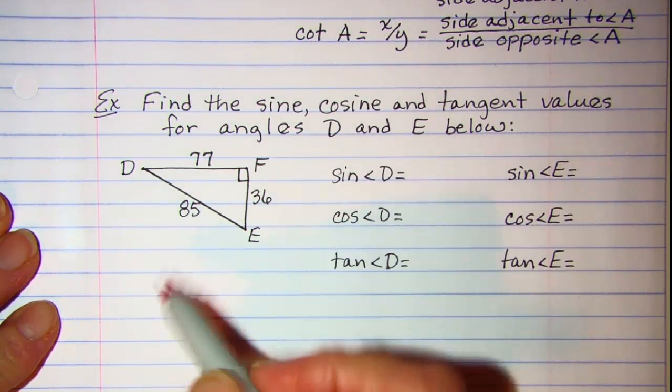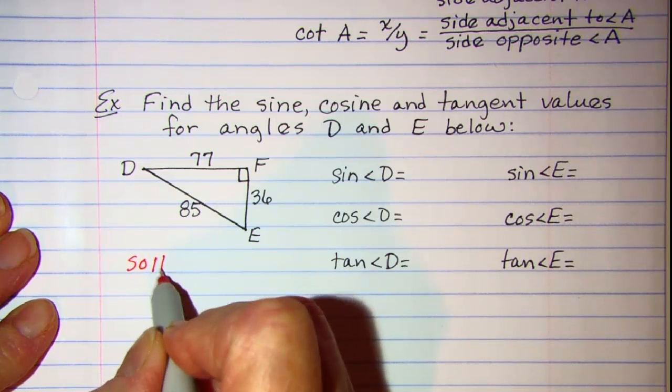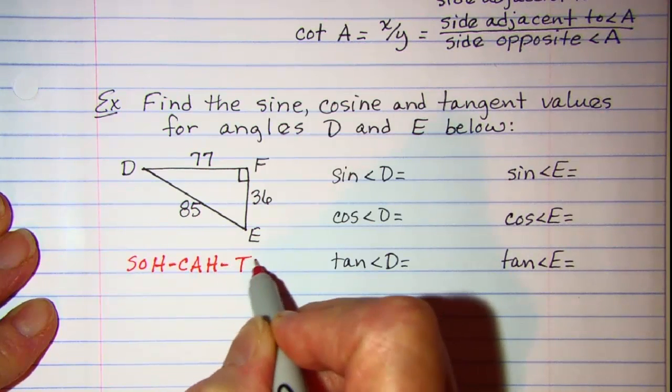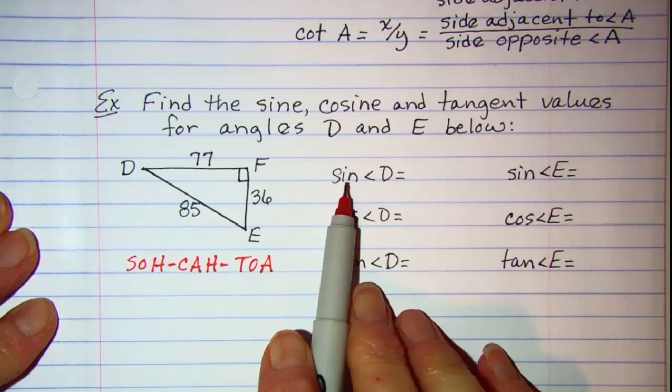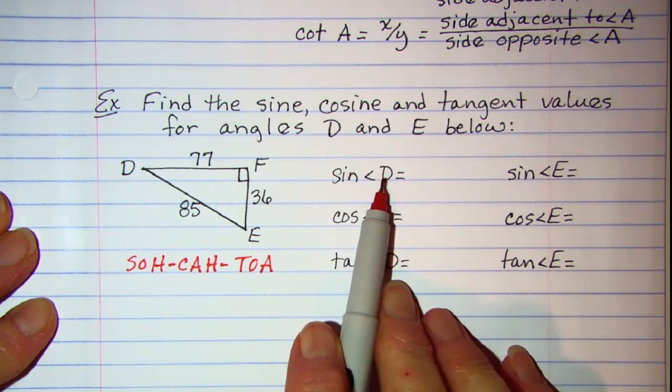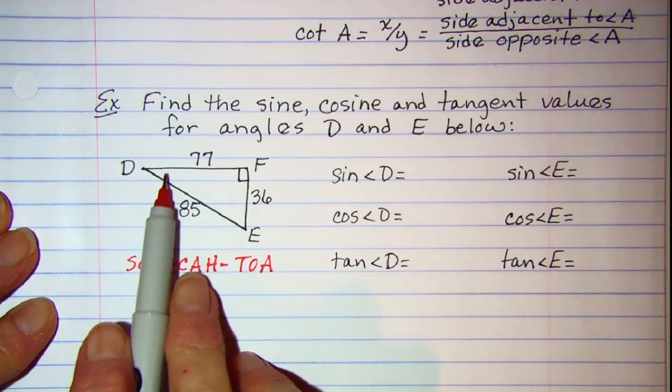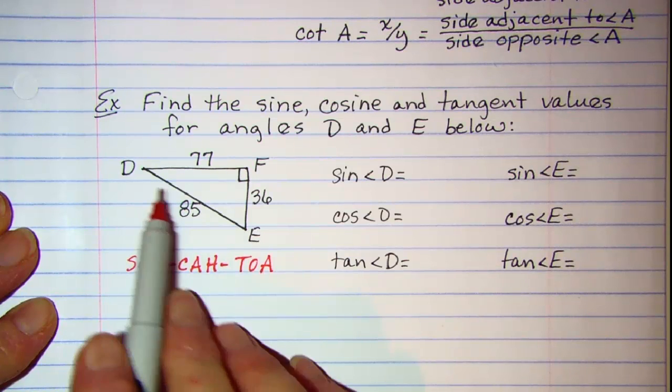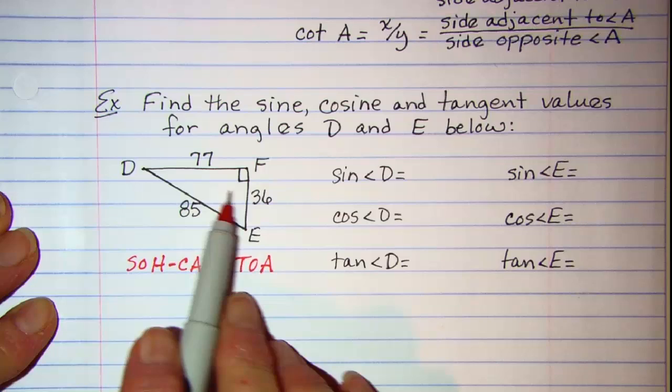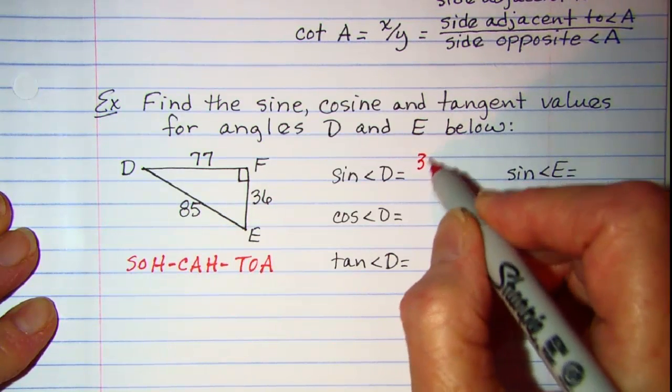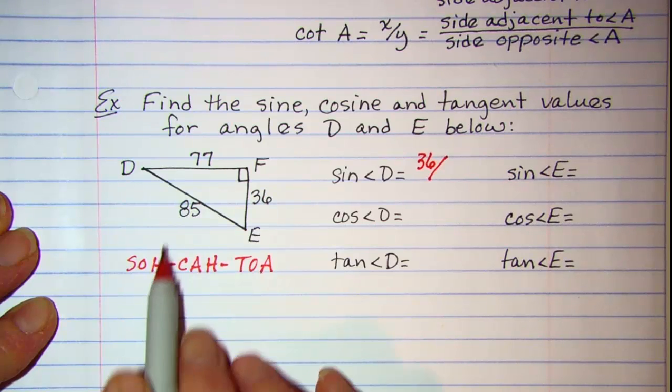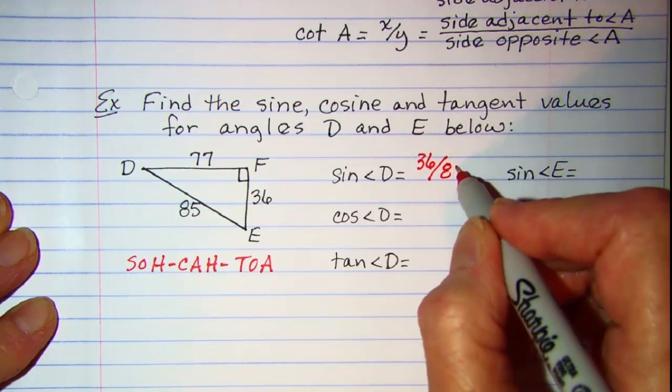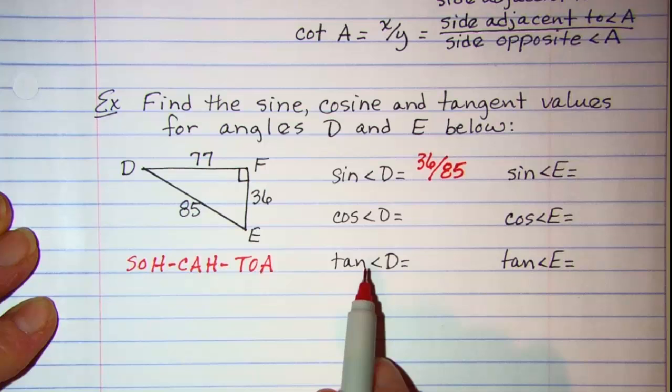So for sine of D, and let me go ahead and write that just for a little bit of help for you right now. In order to get the sine of angle D, I need to sit in this angle right here and find opposite over hypotenuse. So my opposite side is going to be 36 and my hypotenuse is 85 because that's opposite the right angle.